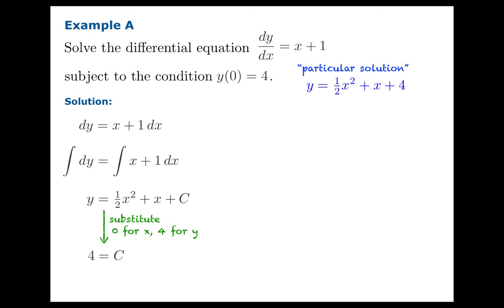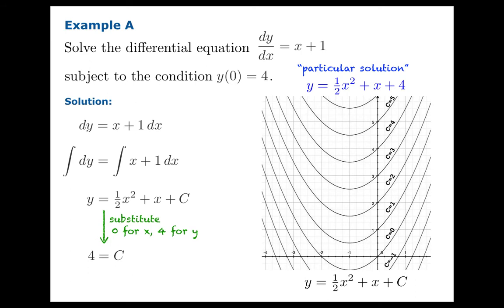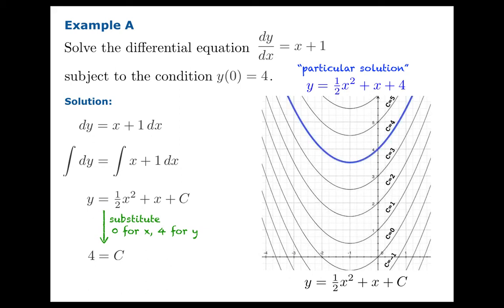Now, what have we accomplished? So it's worth looking at a graph here. There are a bunch of solutions plotted for various values of c. And you will notice that when c is 4, we have selected out the solution for which y(0) equals 4. In other words, the point (0, 4) lies on the graph.